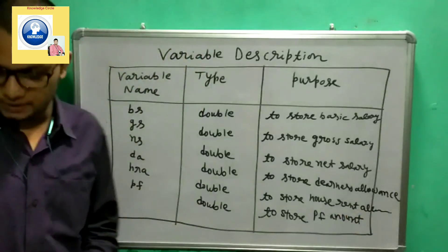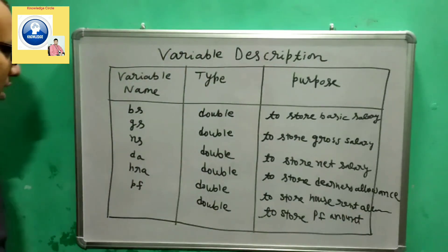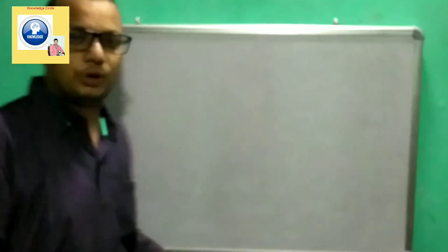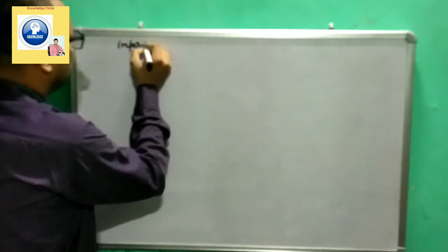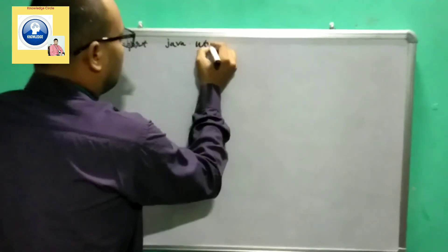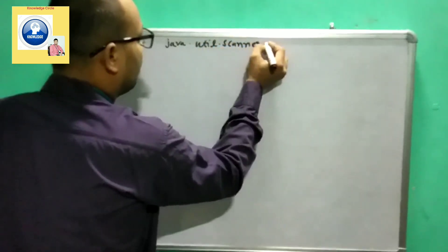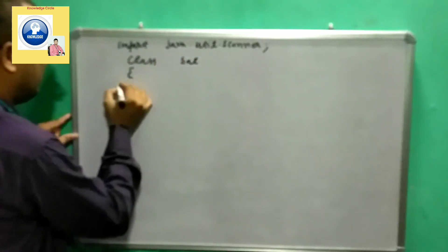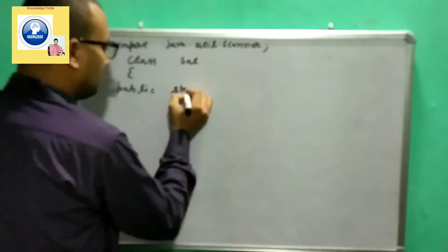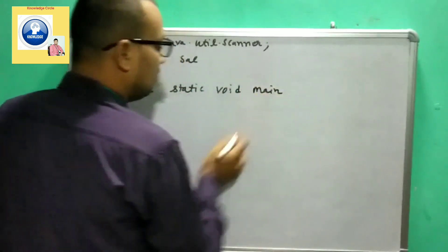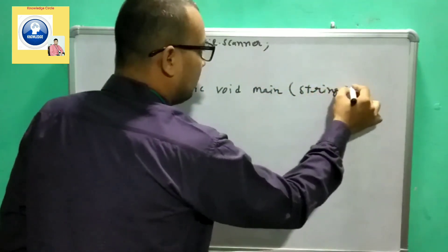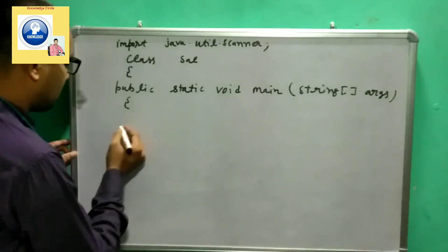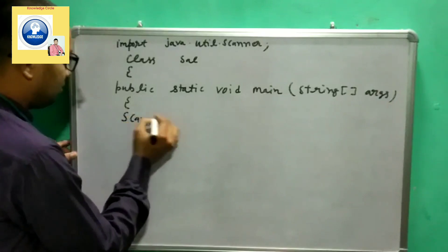Let's start the program. First, import the Scanner class of the util package. Then we write the class name — I'll use 'Sal' for salary. Then we declare the main function: 'public static void main', write the required argument, and add the opening braces.